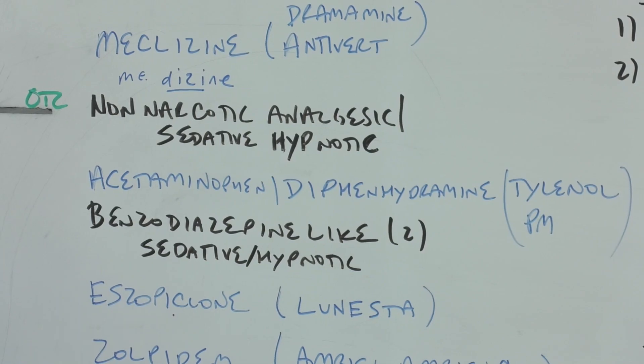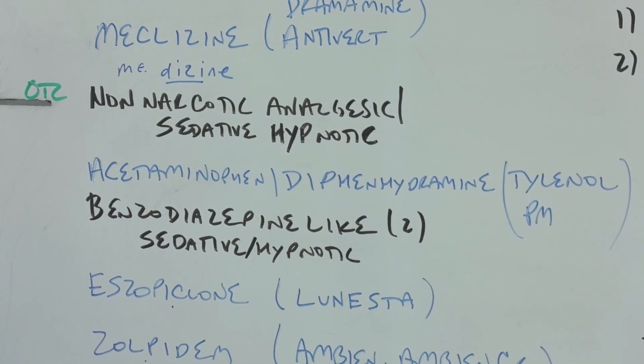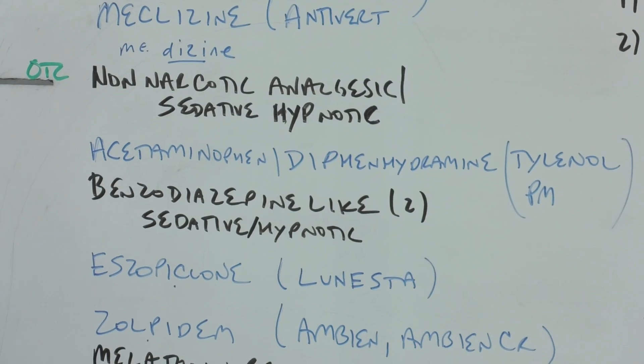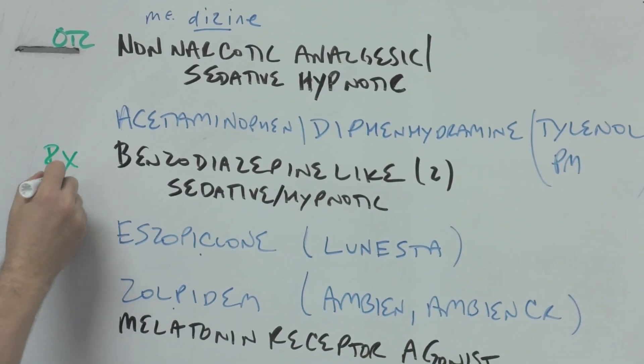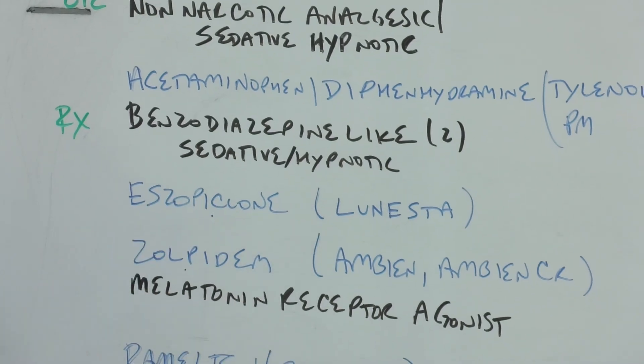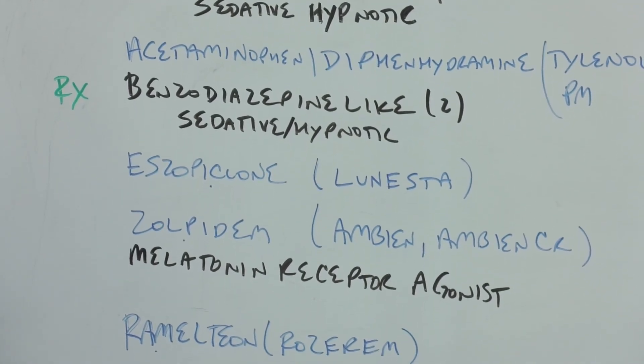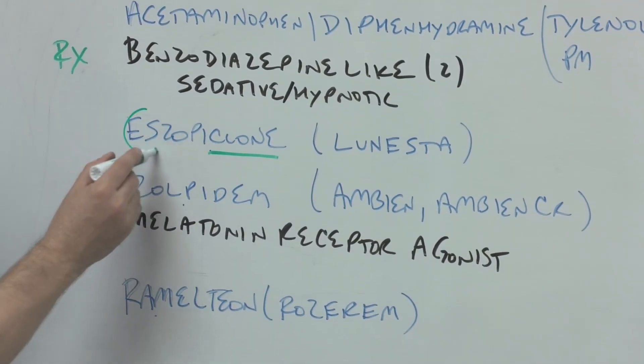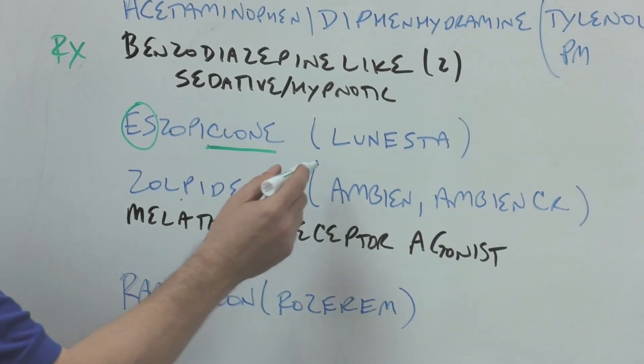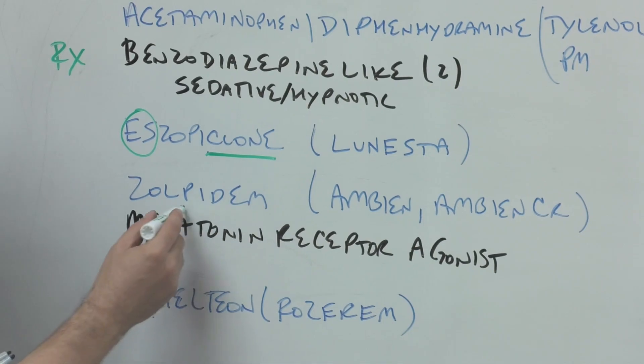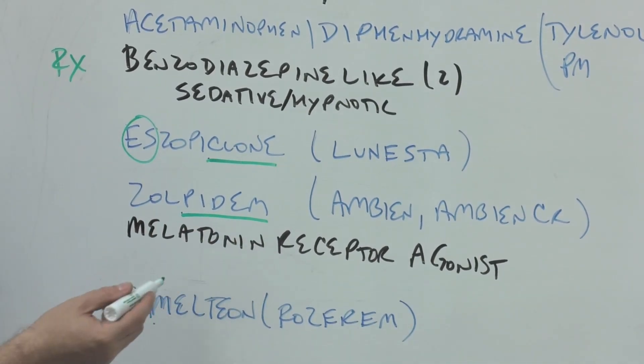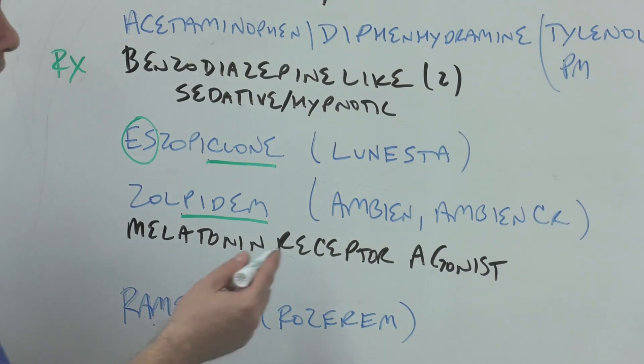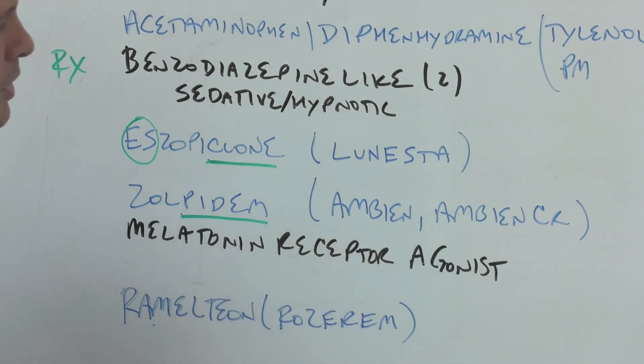Benzodiazepine-like sedative-hypnotics - now we're going to prescription items. Benzodiazepine-like means it's not a benzodiazepine but it works a little like one. Eszopiclone with the clone stem, and you can think of Luna or rest in Lunesta. Zolpidem is the stem PIDEM, and this is Ambien or Ambien CR controlled release. Ambien works to help somebody fall asleep, but if the person has trouble staying asleep, the controlled release version works well.